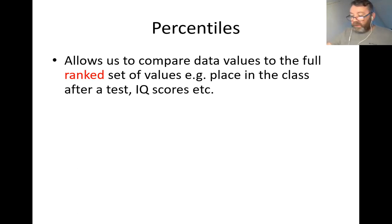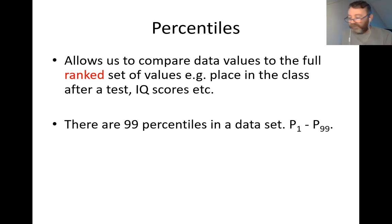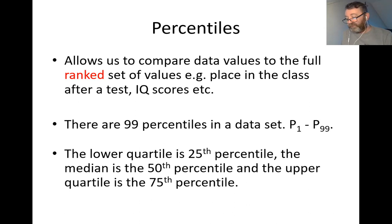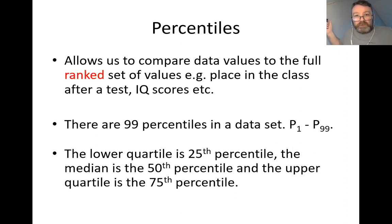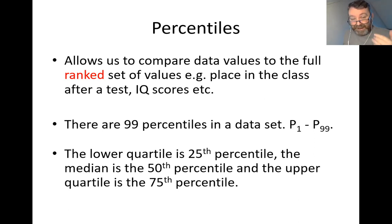There are 99 percentiles in a data set — P1 to P99. We don't have a 100th percentile because that would be at the very top. The lower quartile is the 25th percentile — 25 over 100, which is a quarter. The upper quartile is the 75th percentile — 75%, which is three quarters. The median is the 50th percentile — 50%, which is one half.